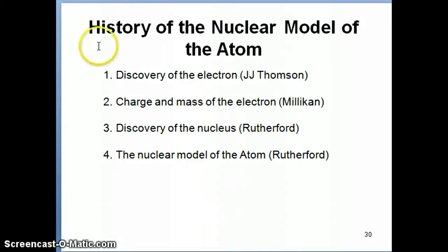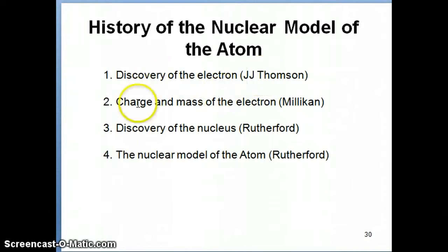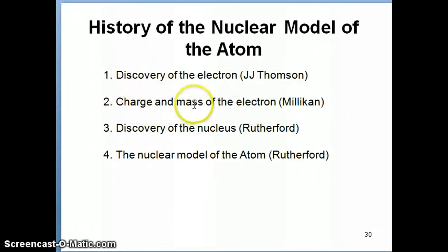Hi everyone. We're going to continue with our discussion on the history of the nuclear model of the atom. Remember in the previous video we talked about how the electron was discovered by JJ Thompson and the experiment with the cathode ray tube. In this video we're going to spend some time talking about how we discovered the charge and mass of the electron — an experiment performed by Robert Millikan.